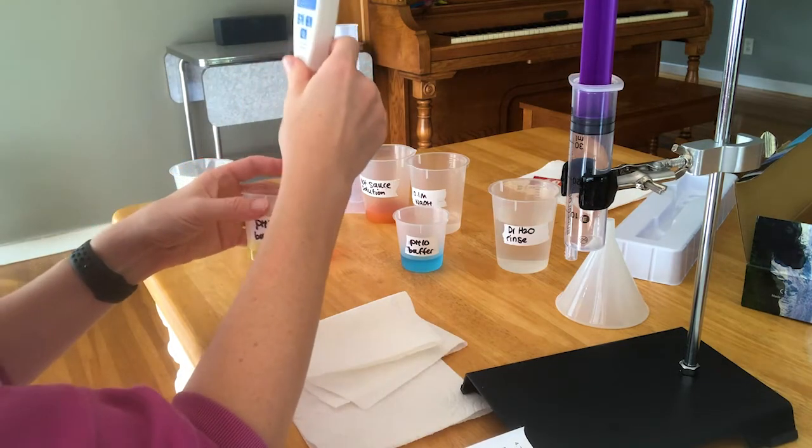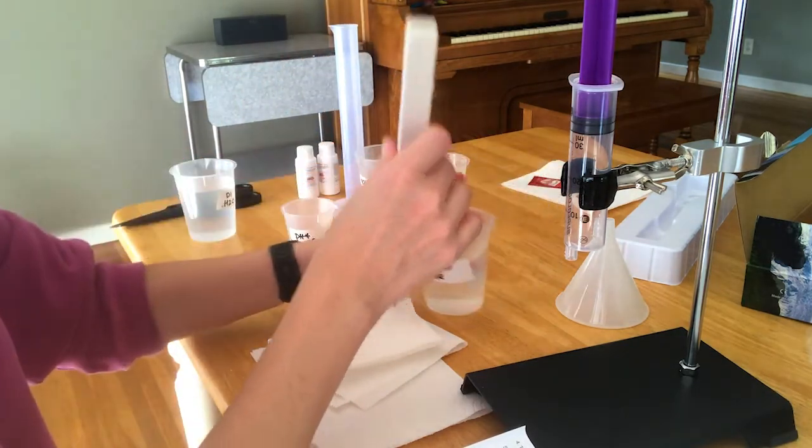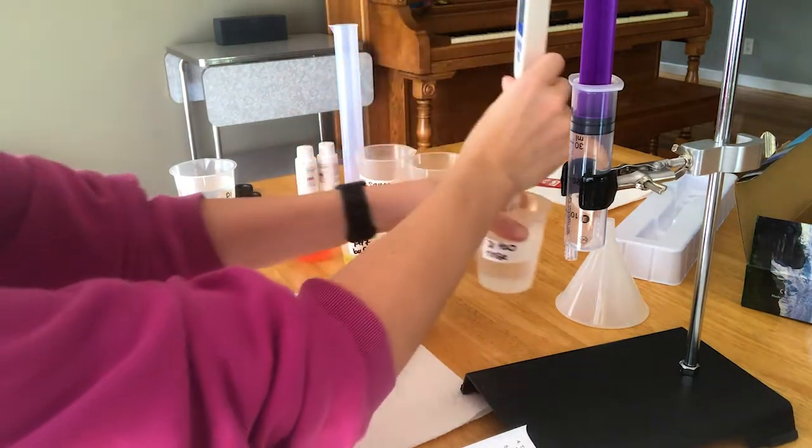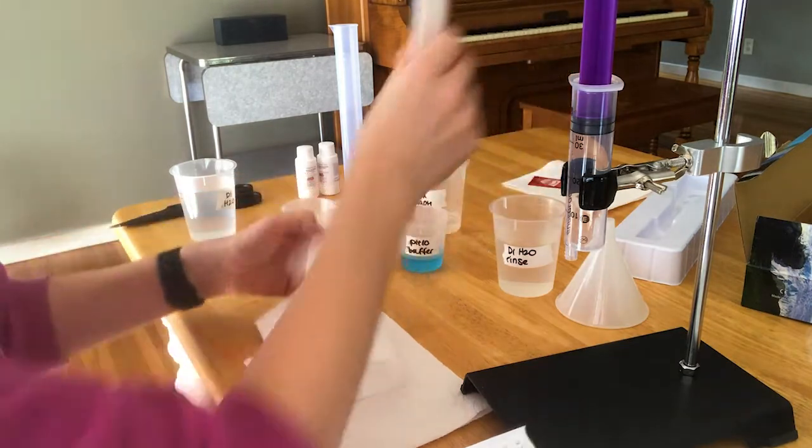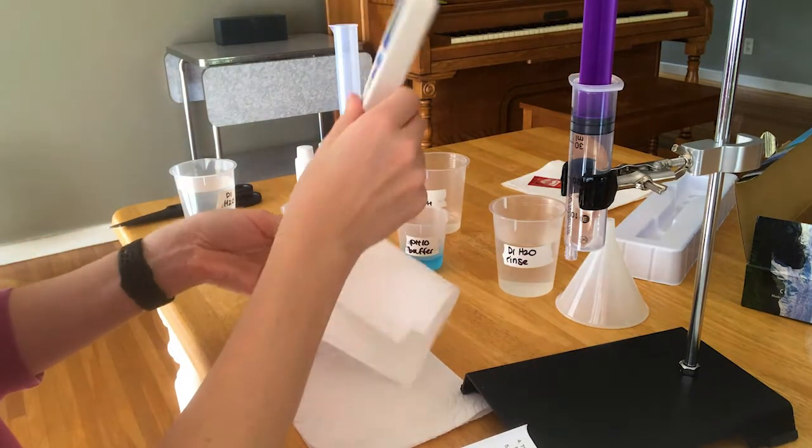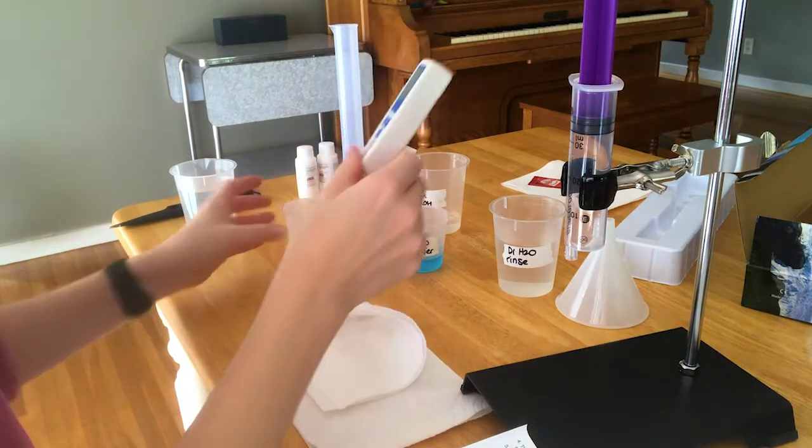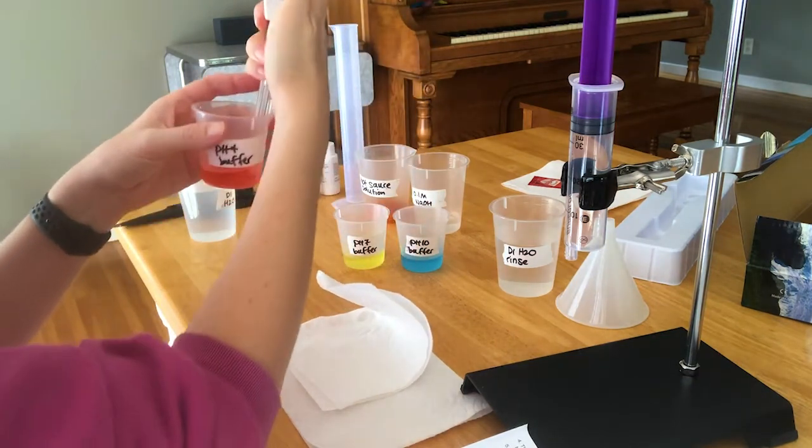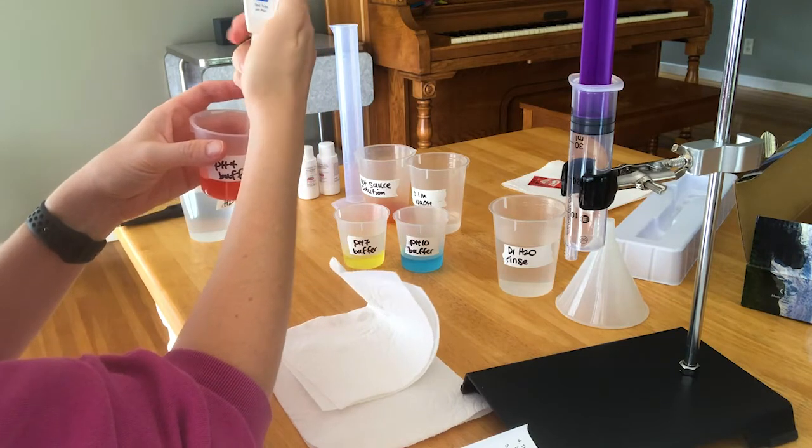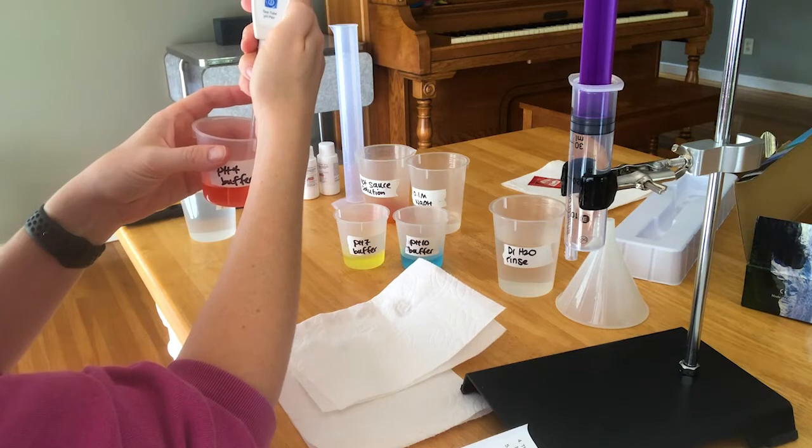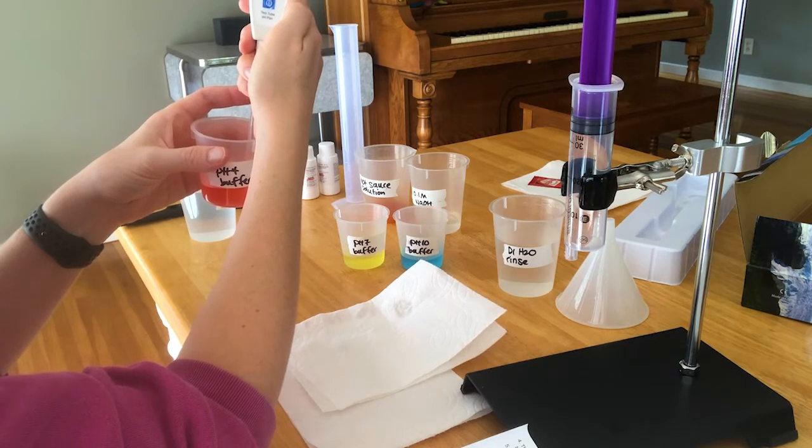In between solutions, I want to make sure that I rinse it off, dab it gently, wipe off the outside. Then we're going to use the pH 4 buffer. So once again, press calibrate. I know it's cut off, but what it says is 4. Then it's going to say SA. When it's done, it'll say end.